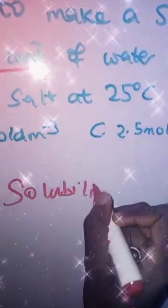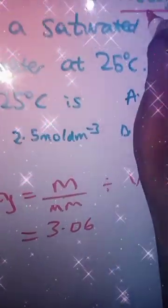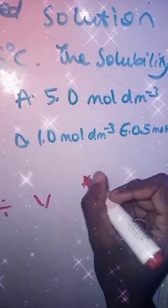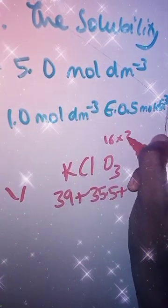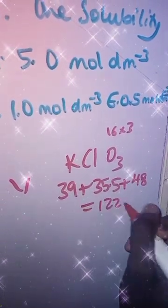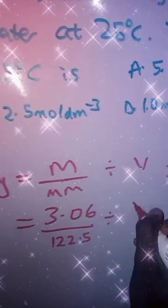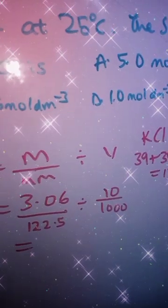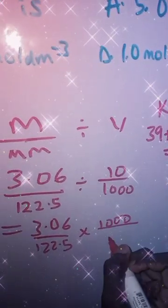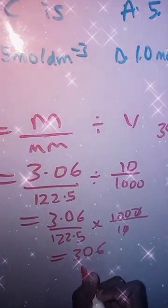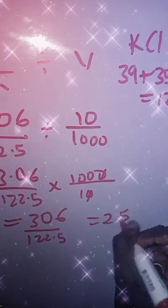Solubility = mass over molar mass, divided by volume. Mass = 3.06, molar mass = 122.5, volume = 10 over 1,000. So: 3.06 over 122.5, times 1,000 over 10. That simplifies to 3.06 times 100 over 122.5, which equals 306 over 122.5. Pressing this in your calculator gives 2.5 mol per dm³. I hope you understand how to get that.